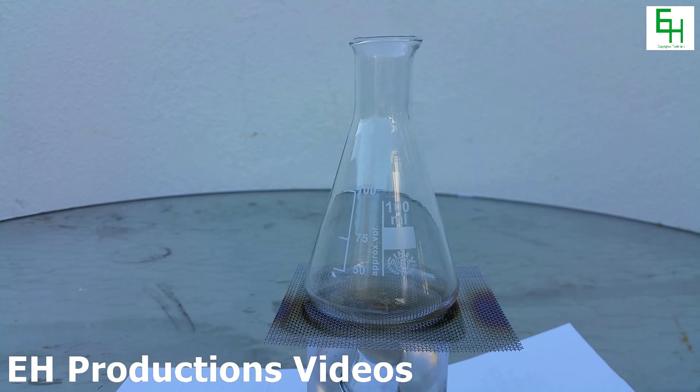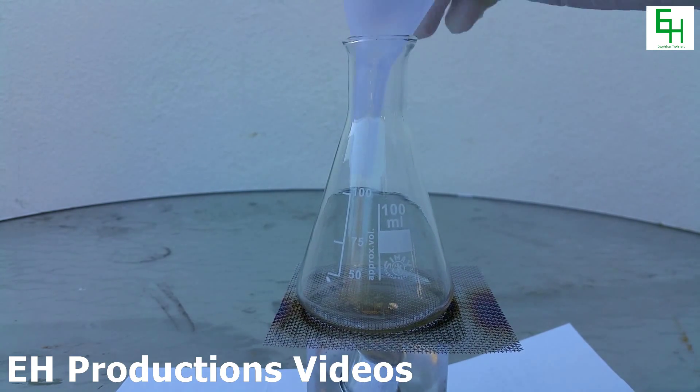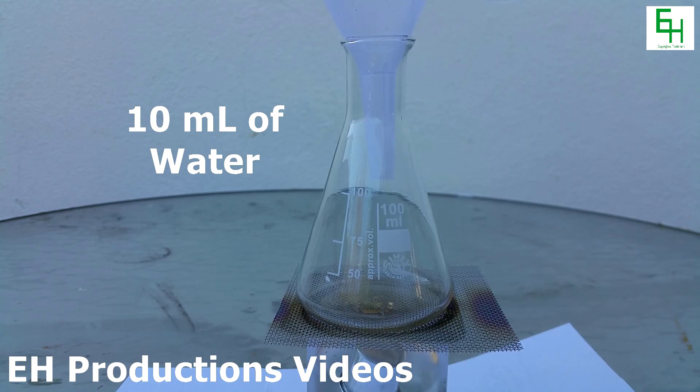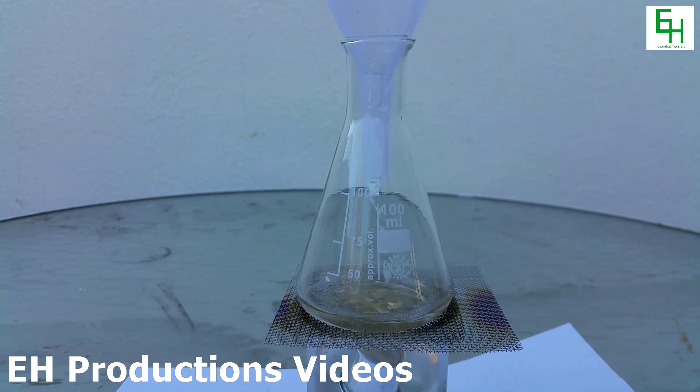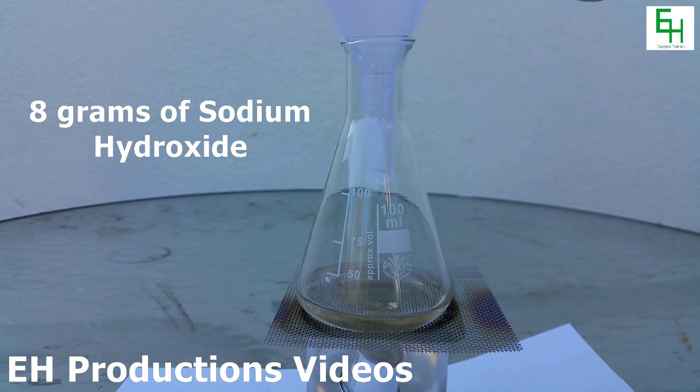Alright now what we're going to do is we're going to get a funnel and we're going to pour in 10 milliliters of water. I actually have 20 milliliters here but I'm going to pour in half of it first. Next we're going to pour in 8 grams of sodium hydroxide.